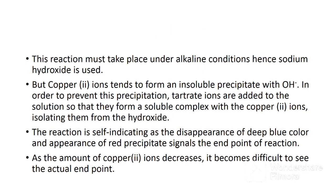This reduction reaction must take place under alkaline conditions; hence, sodium hydroxide — a strong basic solution — is added to the Fehling solution. However, copper(II) ions tend to form an insoluble precipitate with the hydroxyl ions of sodium hydroxide. To prevent this, potassium sodium tartrate is added so that tartrate ions form a soluble complex with the copper(II) ions, isolating them from the hydroxide and keeping them available to react with the reducing sugars.